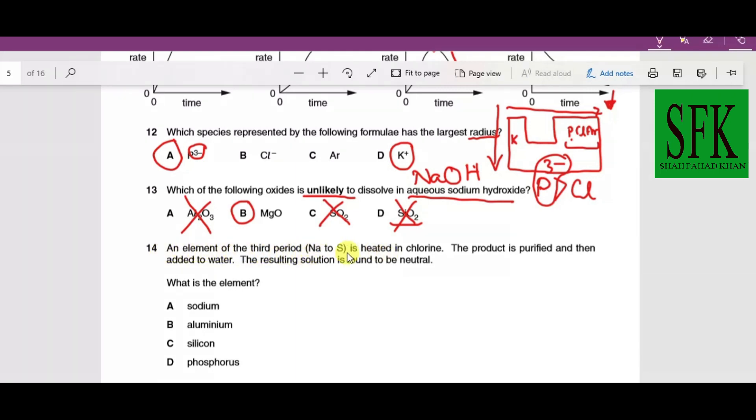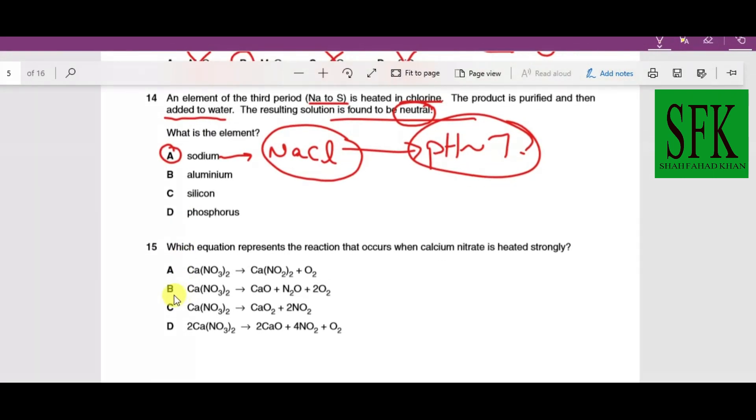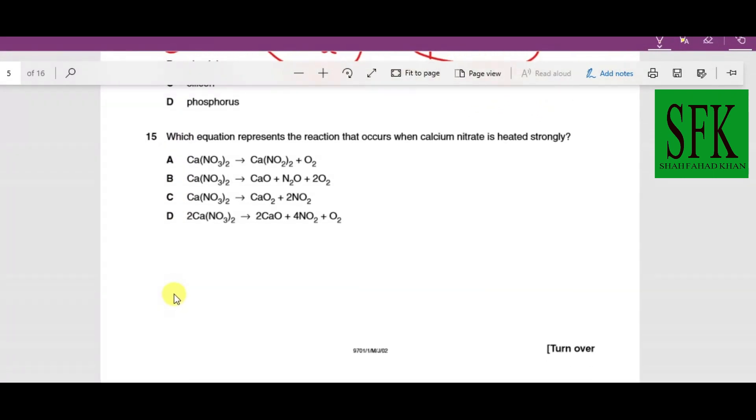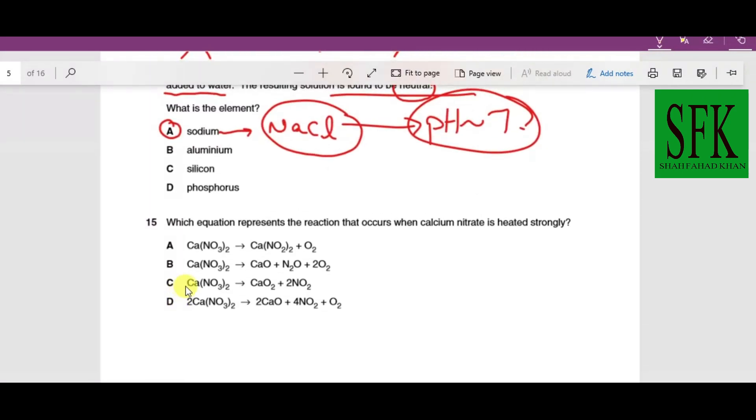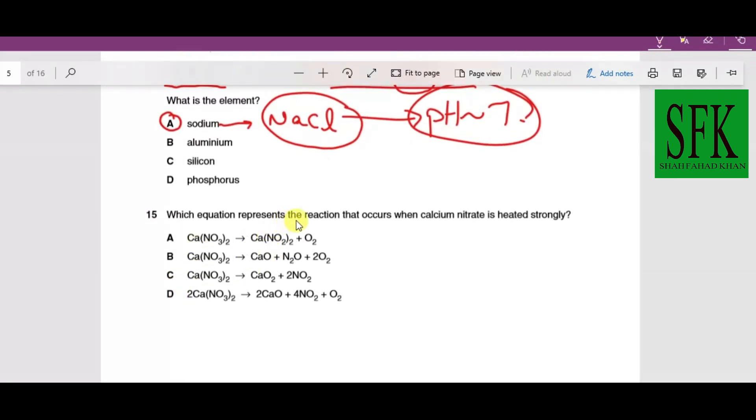An element from the third period from sodium to sulfur is heated in chlorine. The product is purified and then added to water—the resulting solution is found to be neutral. Which is the element? Sodium forms sodium chloride, the common table salt, and this gives us a neutral solution of pH approximately 7. A is the correct answer. Which equation represents the reaction when calcium nitrate is heated strongly?